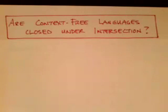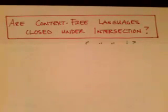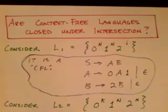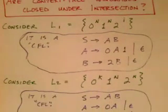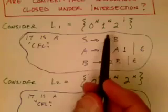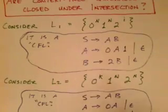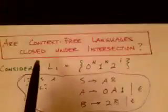The next question is whether context-free languages are closed under intersection. If we take two languages and intersect those sets, is the result also a context-free language? Interestingly, the answer is no — it is not necessarily context-free. It may be in some cases, but not in general. Here's a proof by counterexample showing that the intersection of two context-free languages is not necessarily context-free.